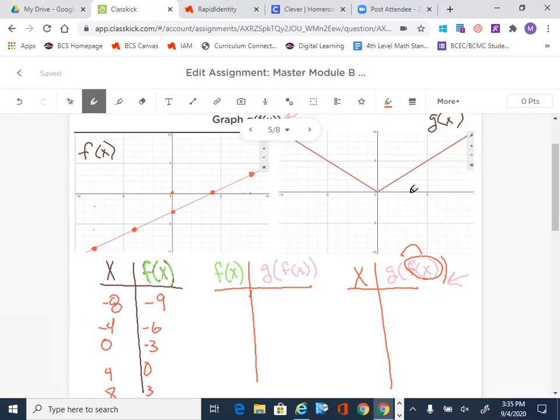Now what it says is to take those f of x values and the goal is to plug them into g of x. So that's what we're going to do now. I'm going to start with f of x, I'm going to plug it in. So in order to do that, this now becomes our input. And we'll see what kind of answers come off of this. So let's take these and just move them over: negative 9, negative 6, negative 3, 0, and 3.